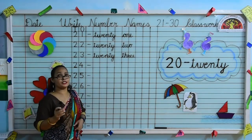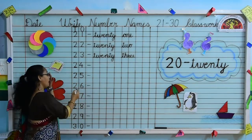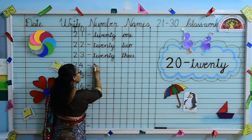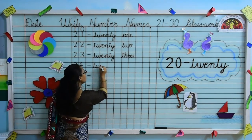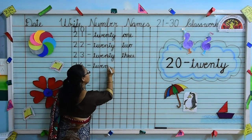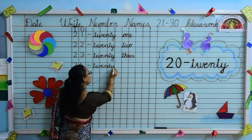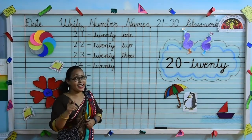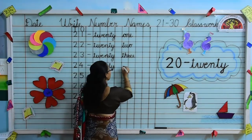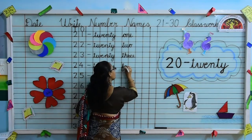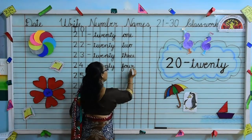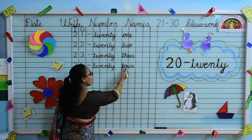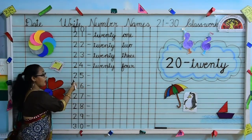Move to next number 2, 4 — 24. Yes, speak and write. Write T-W-E-N-T-Y, 20. What we will write here? Yes, 4. Do you know what is the spelling of 4? Write F-O-U-R, 4. So kids, speak and write. F-O-U-R, 4. T-W-E-N-T-Y, F-O-U-R, 4.